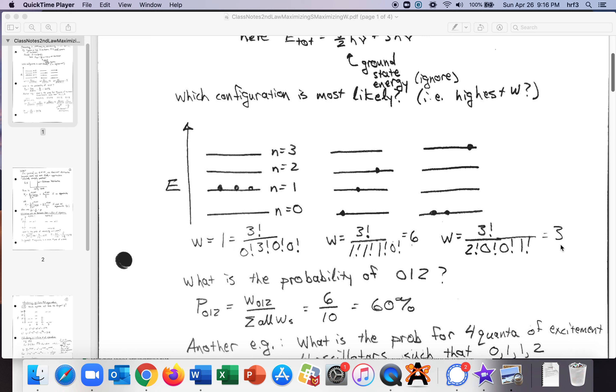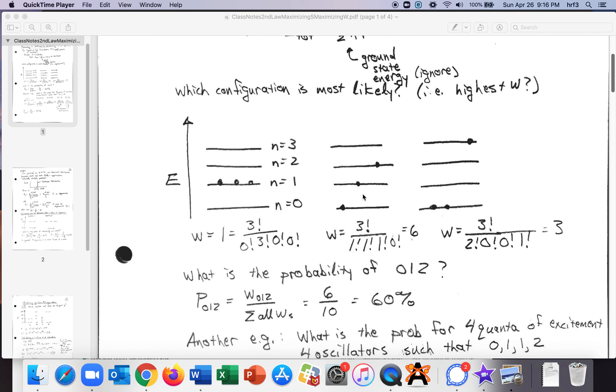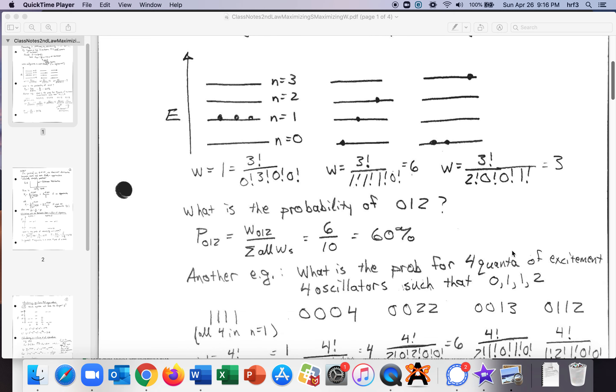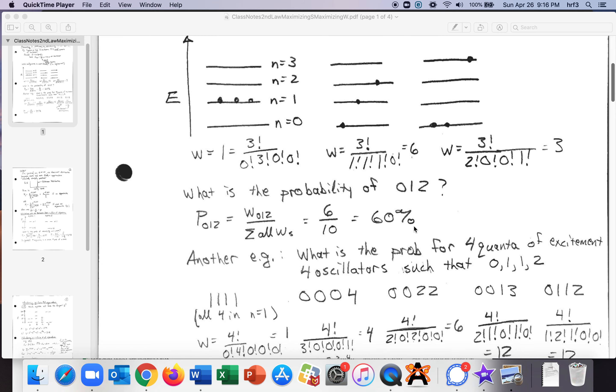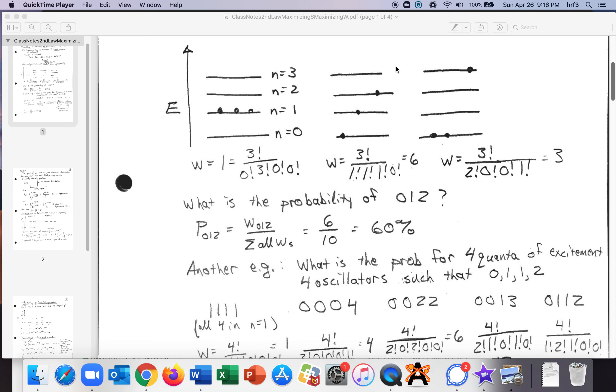So the probability then of being in let's say this state 0 1 2 is going to be the number of ways you can be in 0 1 2 which is 6 divided by the total of all possibilities which is 1 plus 6 plus 3 so there's 10 possible arrangements so 6 divided by 10 60 percent so there's a 60 percent probability that you'll be here.